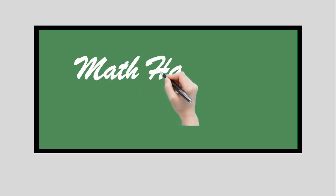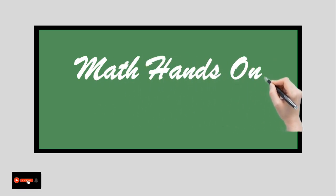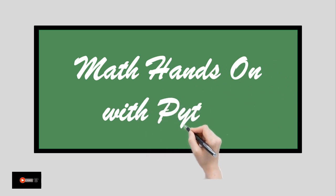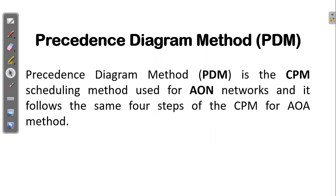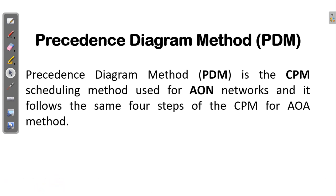Welcome back to the last part of our video series on project management for critical path methods, where we are going to discuss the precedence diagram method, which is used to compute the early and late time for activity or node network models. Basically, the precedence diagram method is the CPM scheduling method used for activity-on-node networks, and it follows the same four steps of the critical path method for activity-on-arc.